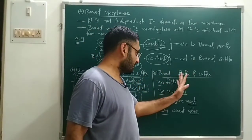'Ed' in 'weighted' is attached after the root word — so 'ed' is a bound suffix. A suffix is the word you attach after the root word. Roots are in almost 100% of cases free morphemes, and suffixes and prefixes are always bound morphemes.